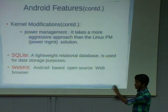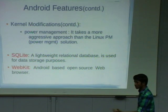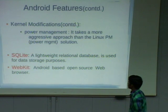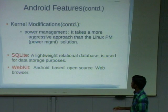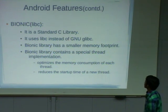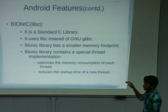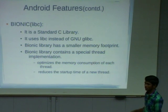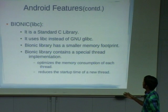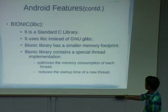In the libraries layer, they have one component: SQLite, which supports relational databases in the tablet. They use WebKit as the browser — it is open source. Their two purposes are to consume less power and occupy less memory in RAM. They also created a custom C library called Bionic. The standard GNU C library glibc takes high power and occupies more memory in RAM, and it contains many functions not relevant to tablets. So they optimized it and created the Bionic library, with the main intention to optimize memory consumption per thread and reduce the start-up time of a new thread.